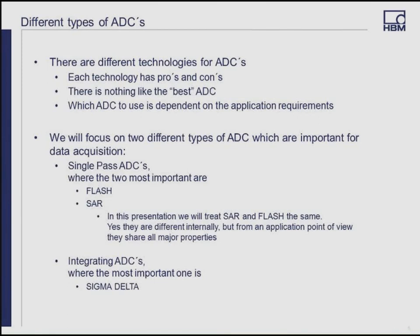What are the different types of ADCs? There are different technologies, and with everything, there's a pro and a con. There is no one perfect ADC — what makes an ADC work for you is your application requirements. We're going to focus on two types important for data acquisition. The first is a single pass ADC: flash and SAR (successive approximation) are two types of single pass ADCs. The other type is an integrating ADC, and sigma-delta is the most important one.